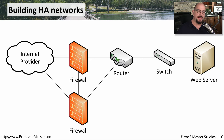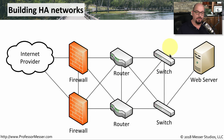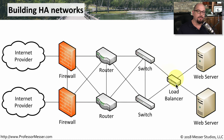Let's build out a highly available network based on the earlier configuration with our internet provider, firewall, router, switch, and web server. In the earlier configuration, our firewall had a problem and we lost connectivity. One way to provide high availability is to include a separate firewall that can work in conjunction with the original. We might also provide redundancy with our routers, running them using high availability protocols so traffic can flow through either or both. We can provide redundancy with our switches and a load balancer for our web servers. We could even include a separate internet provider in case one becomes unavailable, and continue building out high availability until we find the right configuration for our business requirements.